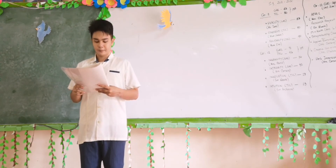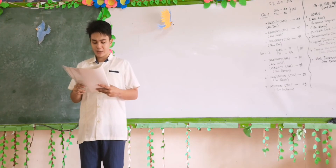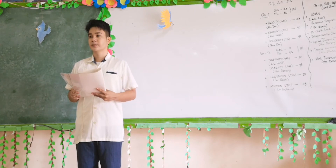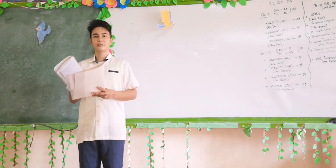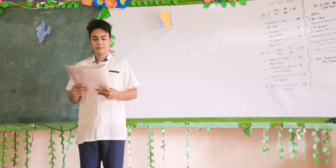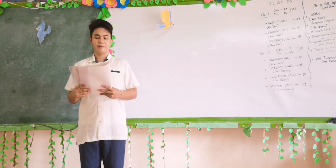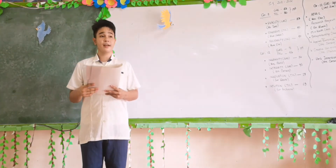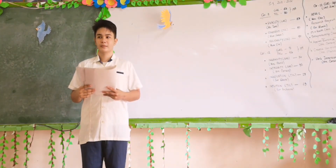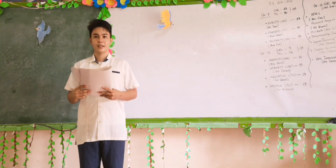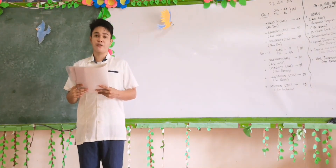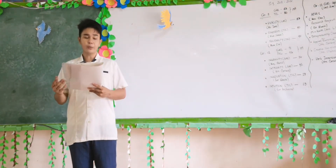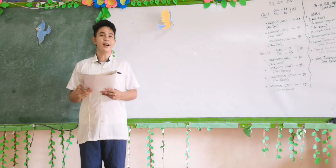Number four: It is the way of calculating the amount of interest that is to be paid on the principal. Number five: The amount of all the interest earned over a period of time. Lastly: It is the addition of interest to the principal amount of a loan or deposit — or in other words, interest on interest.